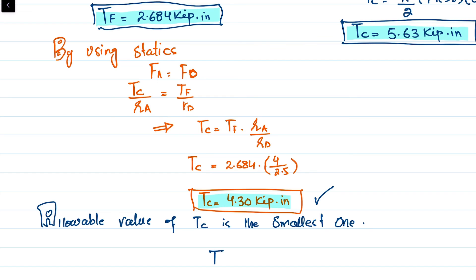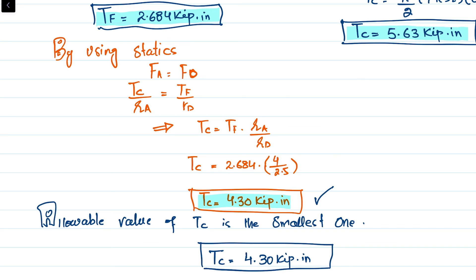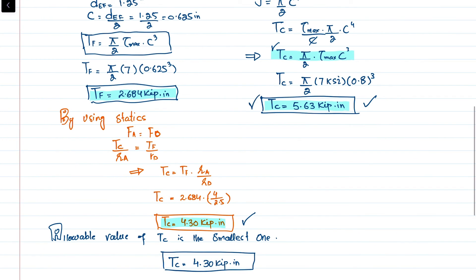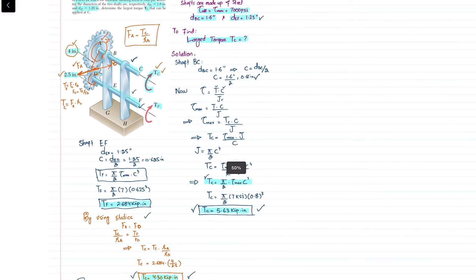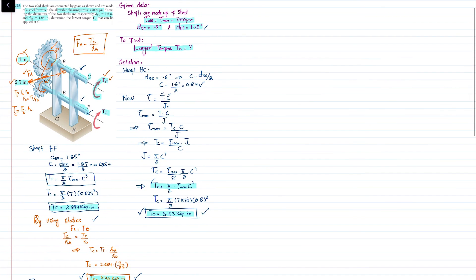The allowable value of TC is the smallest of the two values. Therefore TC = 4.30 kip·inch. We choose the smallest value because it satisfies the equilibrium condition and ensures safety. This is the required answer.